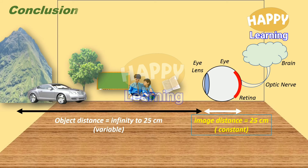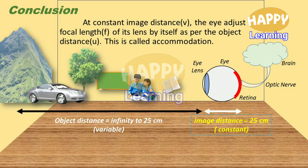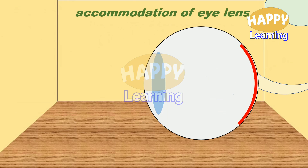Conclusion: At constant image distance V, the eye adjusts its focal length F of its lens by itself as per the object distance U. This is called accommodation. This is the animation to understand accommodation — the eye lens bulges and narrows as per the need. According to the U value, the eye lens F value is adjusted by the eye itself, which is called accommodation.